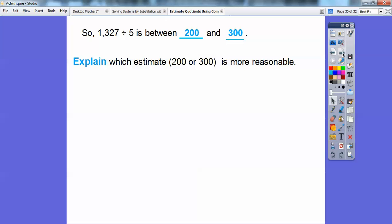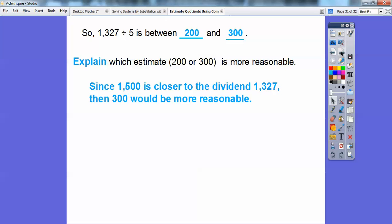Explain which estimate, the 200 or the 300, is more reasonable for this quotient, 1,327 divided by 5. Since 1,500 is closer to the dividend 1,327, remember this is our dividend right here, this number is our dividend. Since it's closer to our dividend, 1,327, then 300 would be more of a reasonable answer.